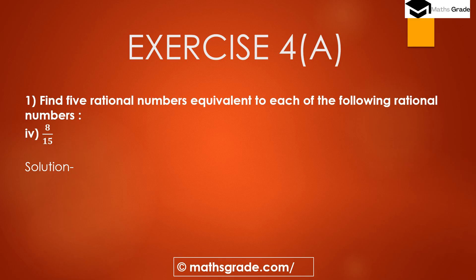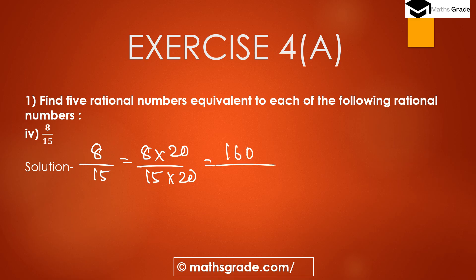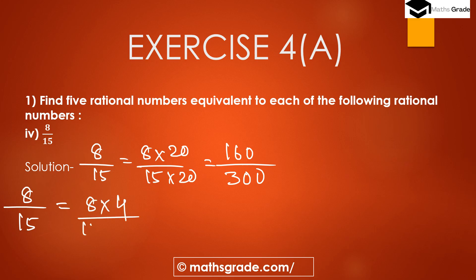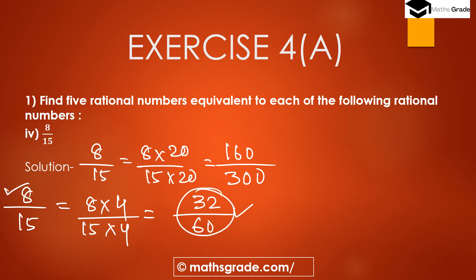Question 1, fourth part: 8 divided by 15. We have to find the 5 equivalent rational numbers of 8/15. First, multiplying by 20: 8×20 = 160 and 15×20 = 300, giving 160/300. Second, multiplying by 4: 8×4 = 32 and 15×4 = 60, giving 32/60.